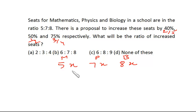Suppose this is increased by 40%, that is it becomes 1.4, which is 7/5. So 5 times 7/5 times x. It becomes 50% increase, so 7 times 3/2 times x. And here it is 75% increment, so 8 times 7/4 times x.